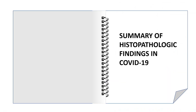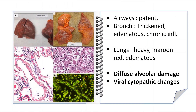To summarize, the prominent histopathological findings in COVID patients were: the airways in most cases were patent; the bronchi were thickened and edematous with mild chronic inflammation; the lungs were heavy, maroon-red, and edematous; diffuse alveolar damage was the main underlying pathology; acute bronchopneumonia was seen in one case; and viral cytopathic changes were seen within the pneumocytes in most of these cases. Thank you.